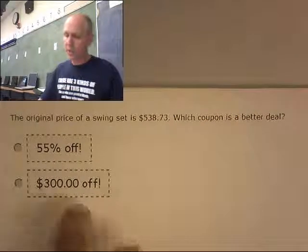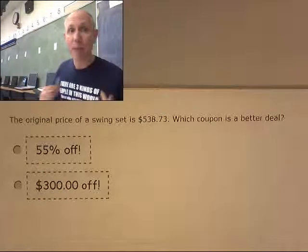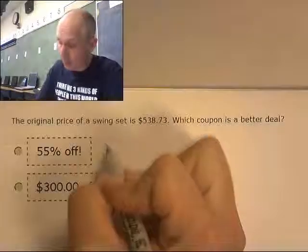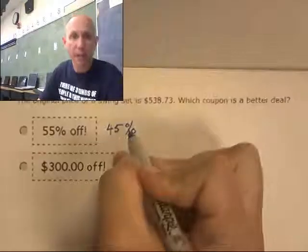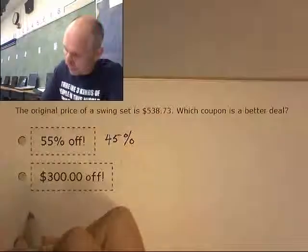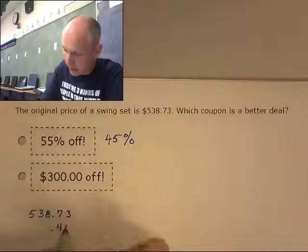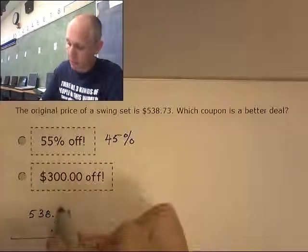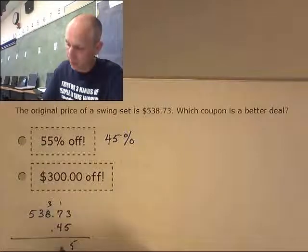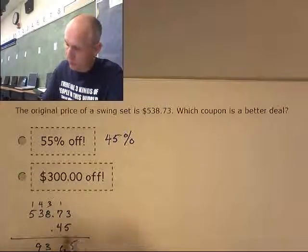What's the better deal: $300 off or 55% off? If they take 55% off, how much do I pay? I pay 45% of it. So let's do 45% of the original price, $538.73. 0.45 times $538.73 — let's work through this multiplication.